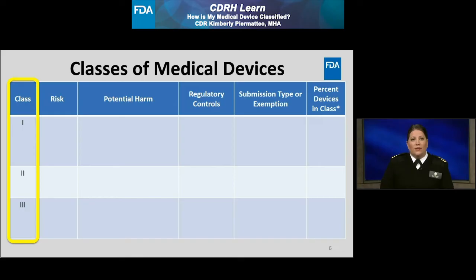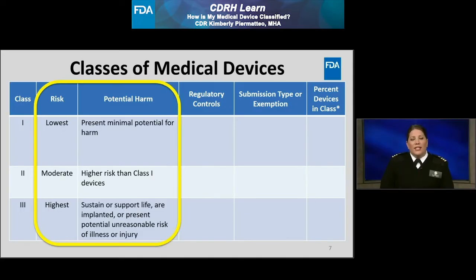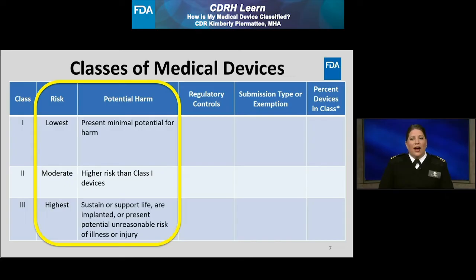As I discuss each class of medical devices, I will fill in the middle columns of this table. The columns are titled device risk, potential harm, as well as applicable regulatory controls and submission types or exemption for each device class. Class 1 devices are considered to be the lowest risk and present minimal potential for harm to the patient or user. Class 2 devices are considered moderate risk and present a higher risk than Class 1 devices. Class 3 devices are considered the highest risk, and these devices may sustain or support life, be implanted, or present the potential for unreasonable risk of illness or injury.